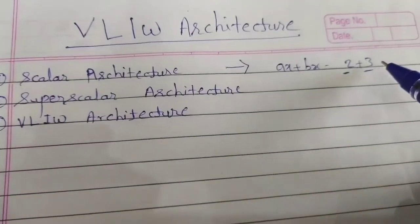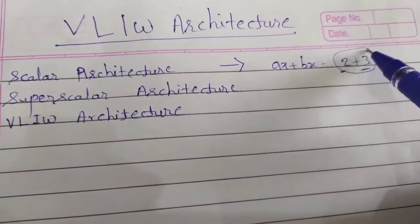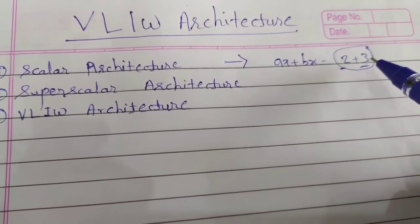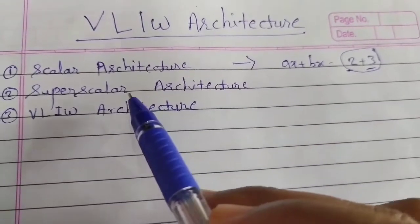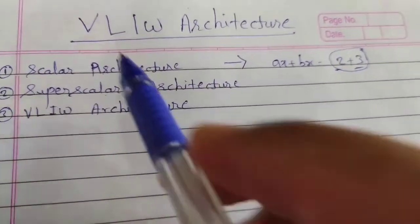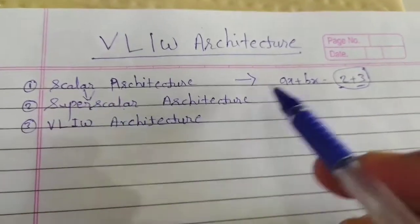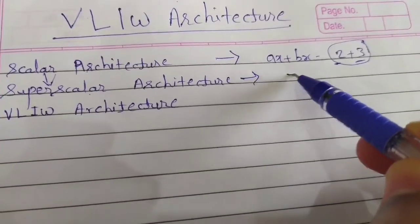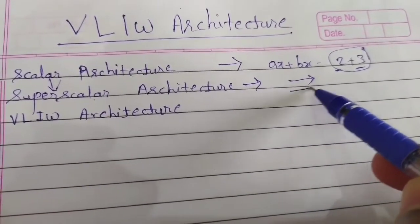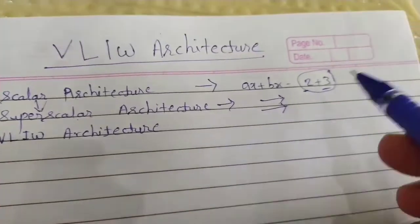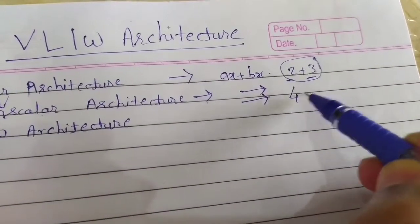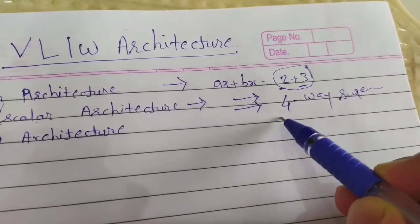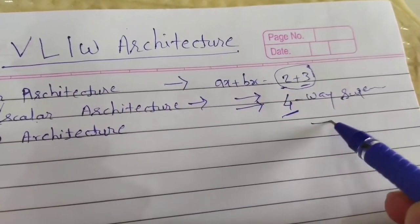In scalar architecture, only one pipeline is used to perform operations. Instead of that, if you have multiple pipelines, you can perform multiple operations together, and that architecture or processor is called a superscalar processor. It is an advanced version. There are multiple pipelines, so one pipeline will do one operation while at the same time another pipeline can do another. Suppose it is an n-way or four-way superscalar architecture — it can perform four operations together with four pipelines.